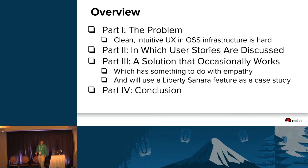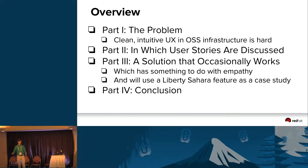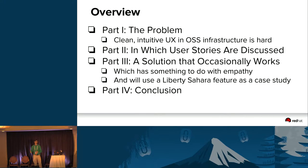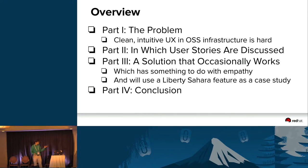The problem we're going to talk about revolves around the idea that building a clean, intuitive user experience in OSS infrastructure products — where you're trying to tie together many backends, many implementations of the same use case — is very hard to do in a user-empathic way that lets the user know where they are and what to do next. We'll talk about user stories, a traditional agile approach, and then a solution that worked for one use case in Sahara this cycle.